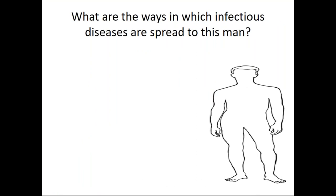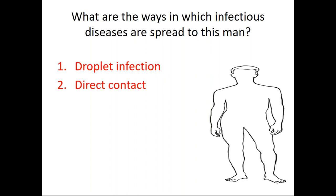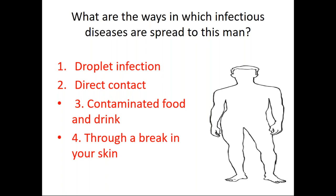What are the ways in which infectious diseases are spread? First, there is droplet infection. It can also be by direct contact, as well as through contaminated food and drink. It can also pass through a break in your skin. For example, droplet infection can cause flu, direct contact can cause glandular fever, contaminated food and drink can cause food poisoning, and a break in the skin can lead to secondary infections.